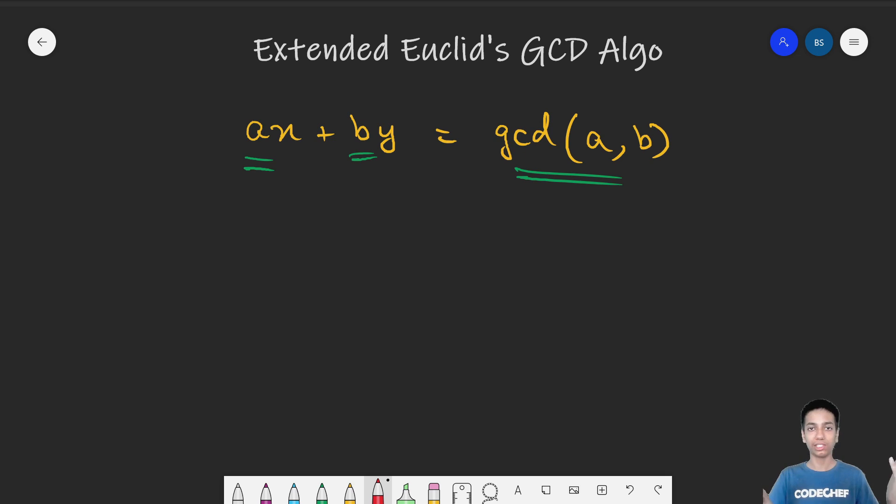You cannot rearrange the equations and get the value of X and Y. It is basically not possible mathematically, but we can do it algorithmically. When we cannot do something at one go, we must try to do it in multiple goes, and this hints at recursion.